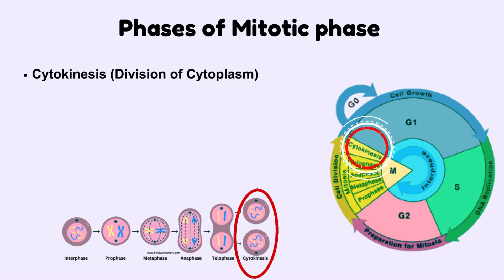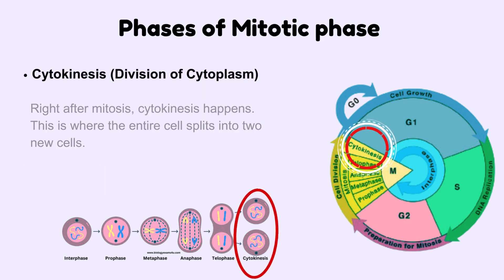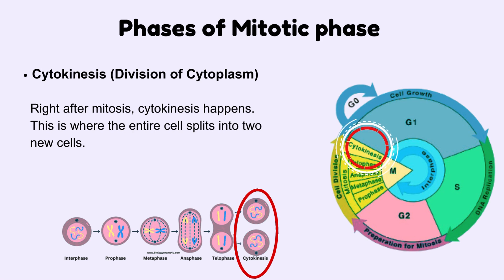Cytokinesis is the phase of division of the cytoplasm. Right after mitosis, cytokinesis happens. This is where the entire cell splits into two new cells, and each daughter cell gets its own complete set of organelles and cytoplasm.